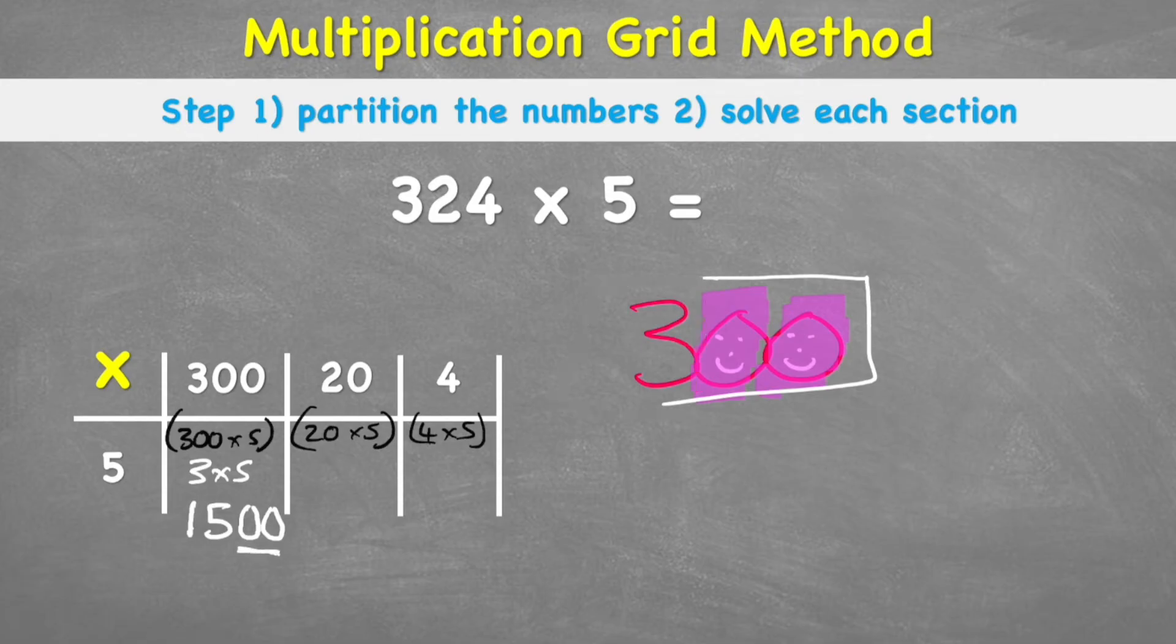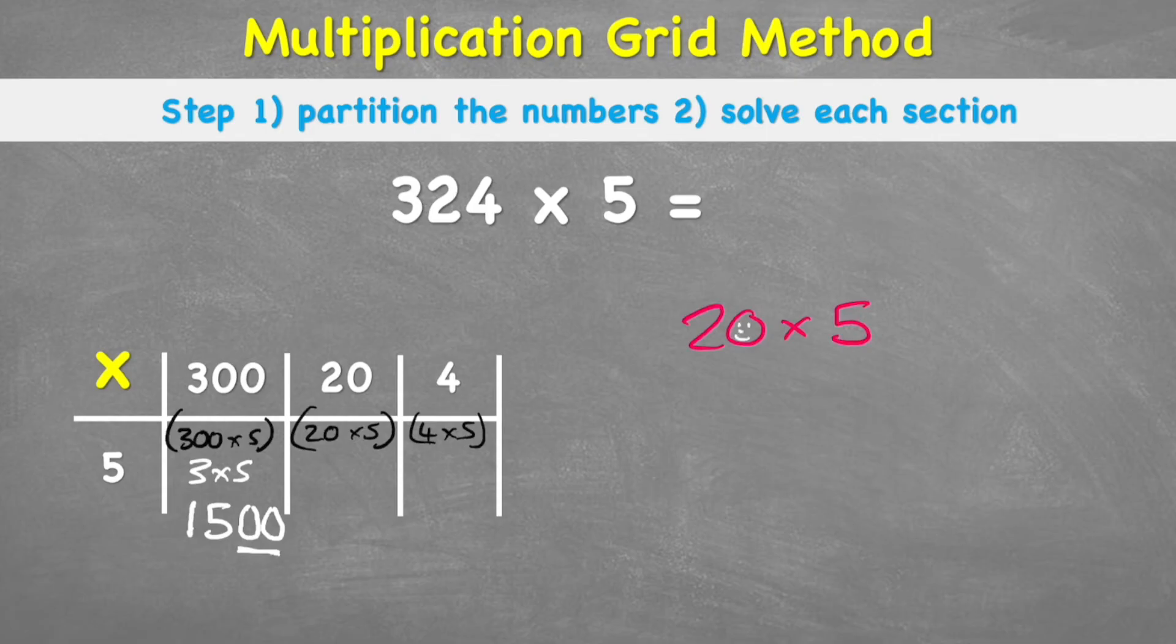Let's have a look at that with the second example. My second example says 20 times 5. And again, I can see I have one happy number. So I can just ignore that for a moment and do 2 times 5, which equals 10. Put them in this box. And then I've got to put my happy number back. Therefore, my answer is actually 100.